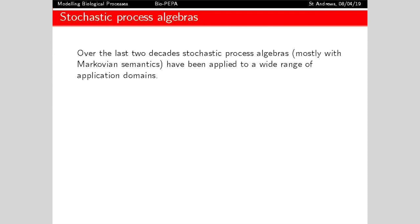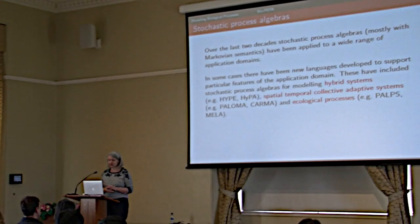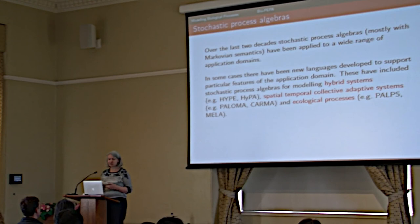Over the last couple of decades, stochastic process algebras have spread far and wide into many different application domains. Often when we start to look at a new application domain we need to slightly change the features of the language. This is a whole strand of research — looking at application domains and trying to find a neat language with not too many operators but expressive enough for the domain. KARMA, as I said, is still an ongoing experiment for the collective adaptive systems area.